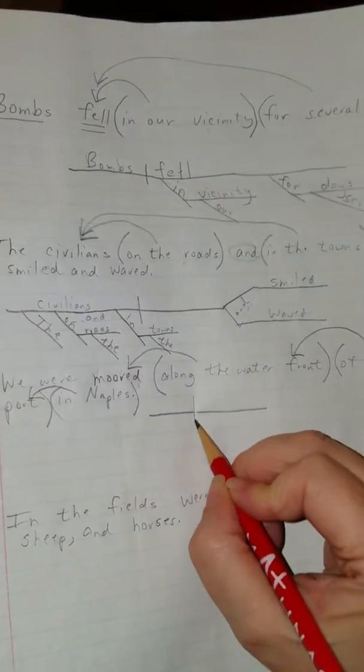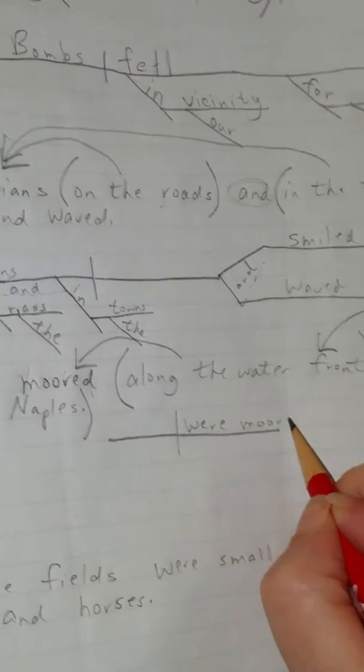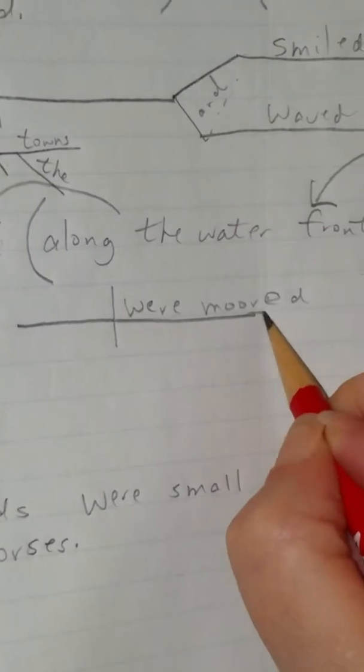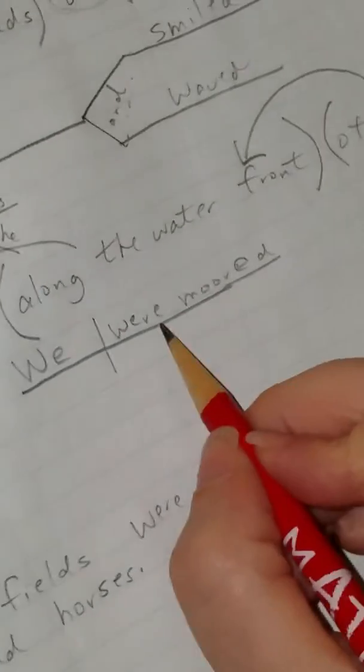So I have my baseline. I begin with my verb. It's a phrase. We're moored. Who was moored? We were moored. Where were we moored?